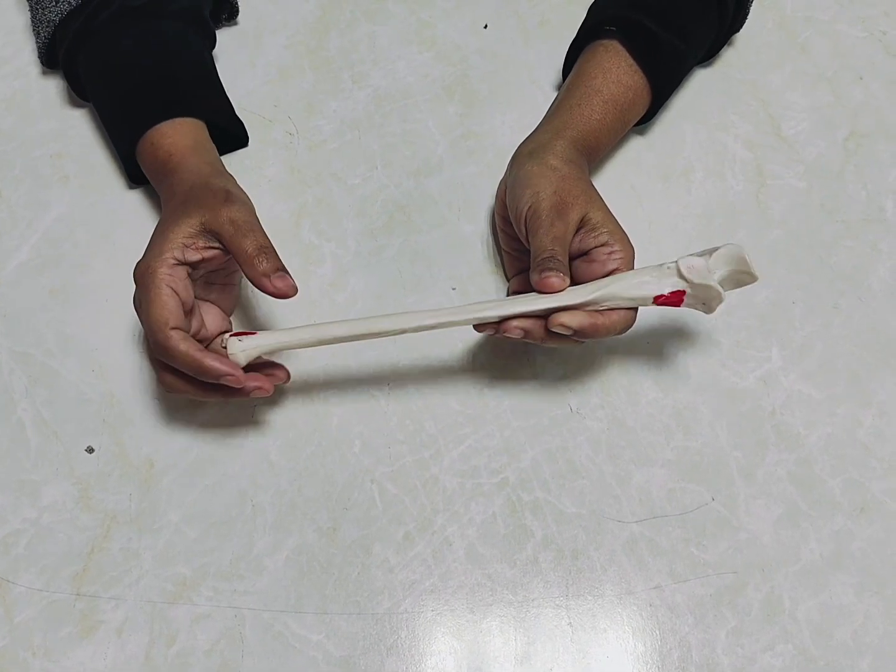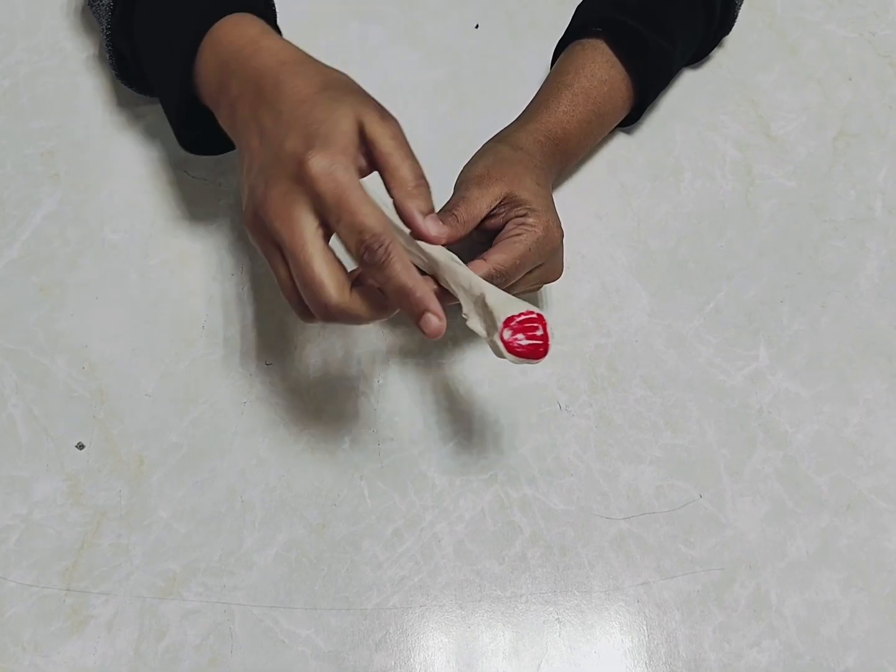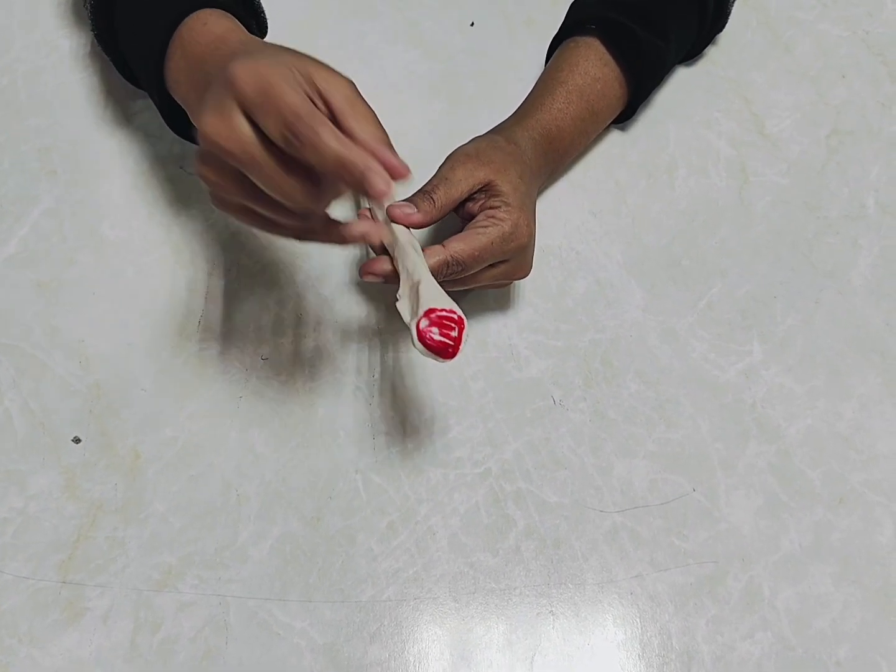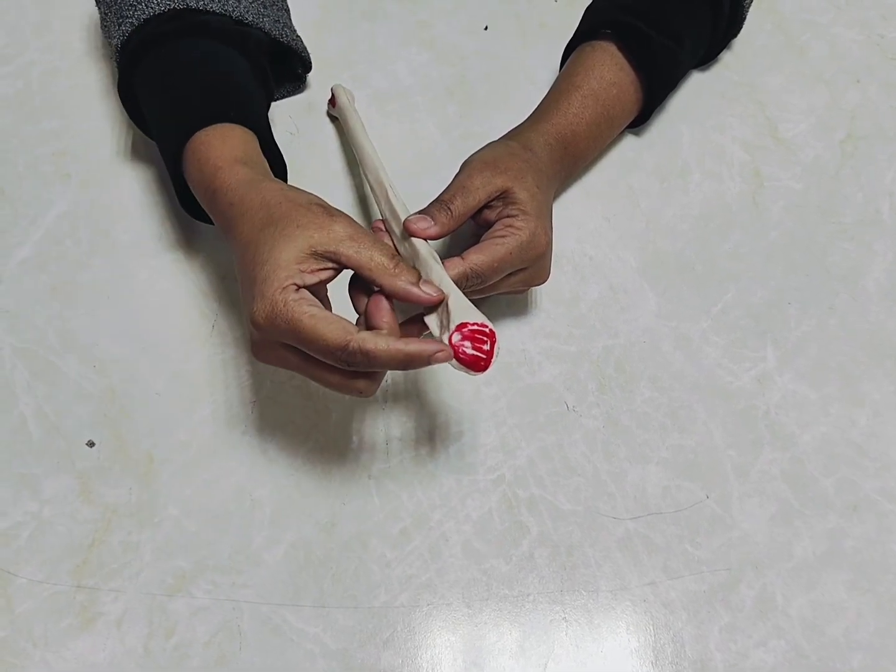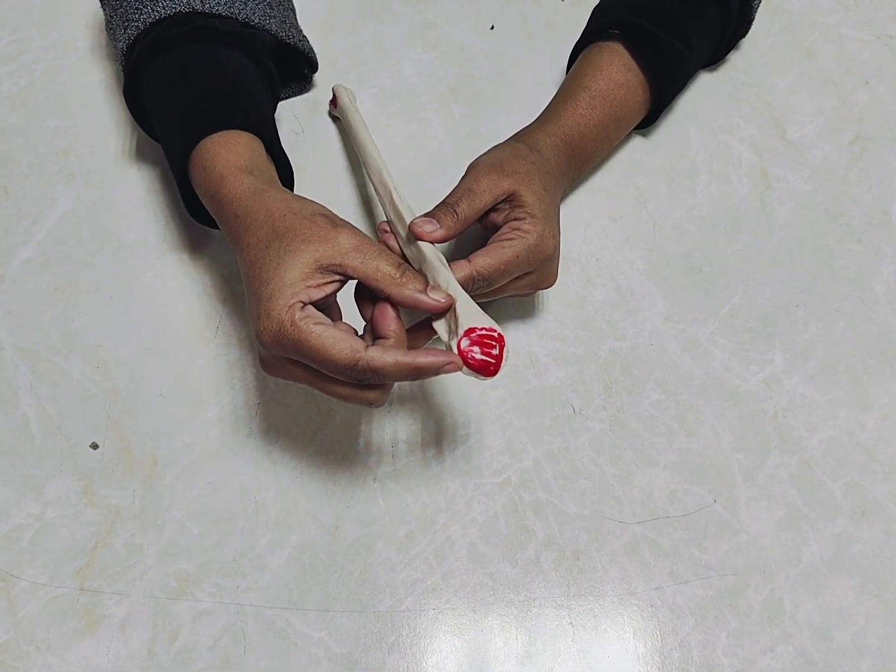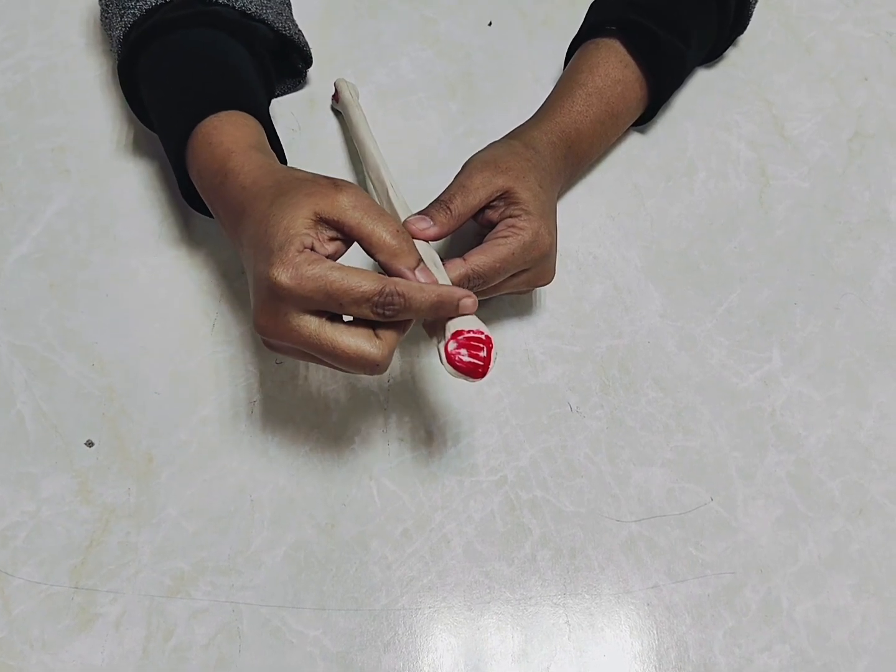In the proximal end, we can make a marking on the olecranon process superior surface and ask you what will be attached here. You have to say there will be attachment of the capsular ligament. If the question asks what muscle will be inserted here, you have to say there will be insertion of triceps brachii.